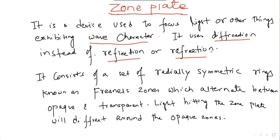The phenomena is diffraction phenomena. So, it consists of alternate opaque and transparent zones which are known as Fresnel zones, and they are symmetric. This is the idea about zone plate.